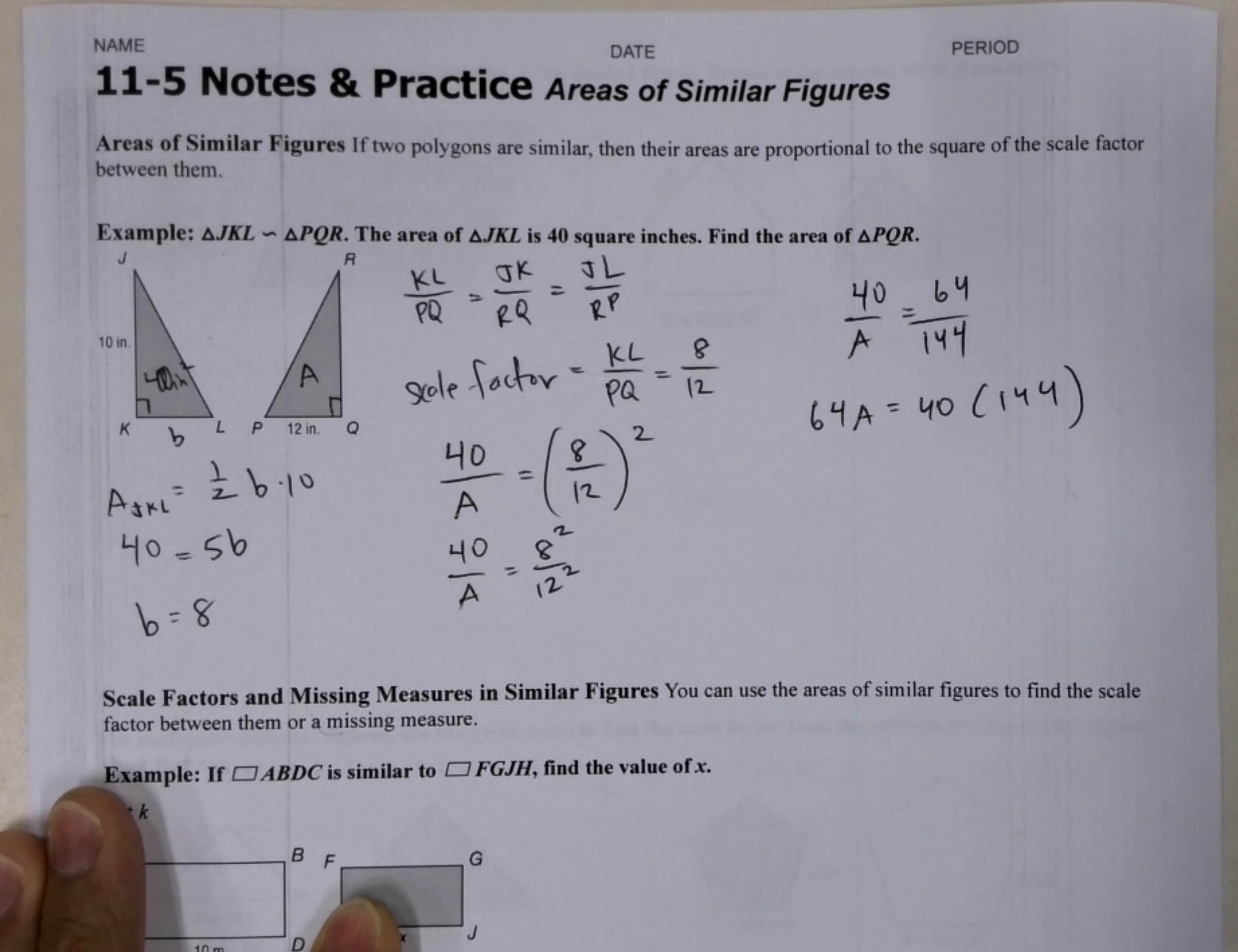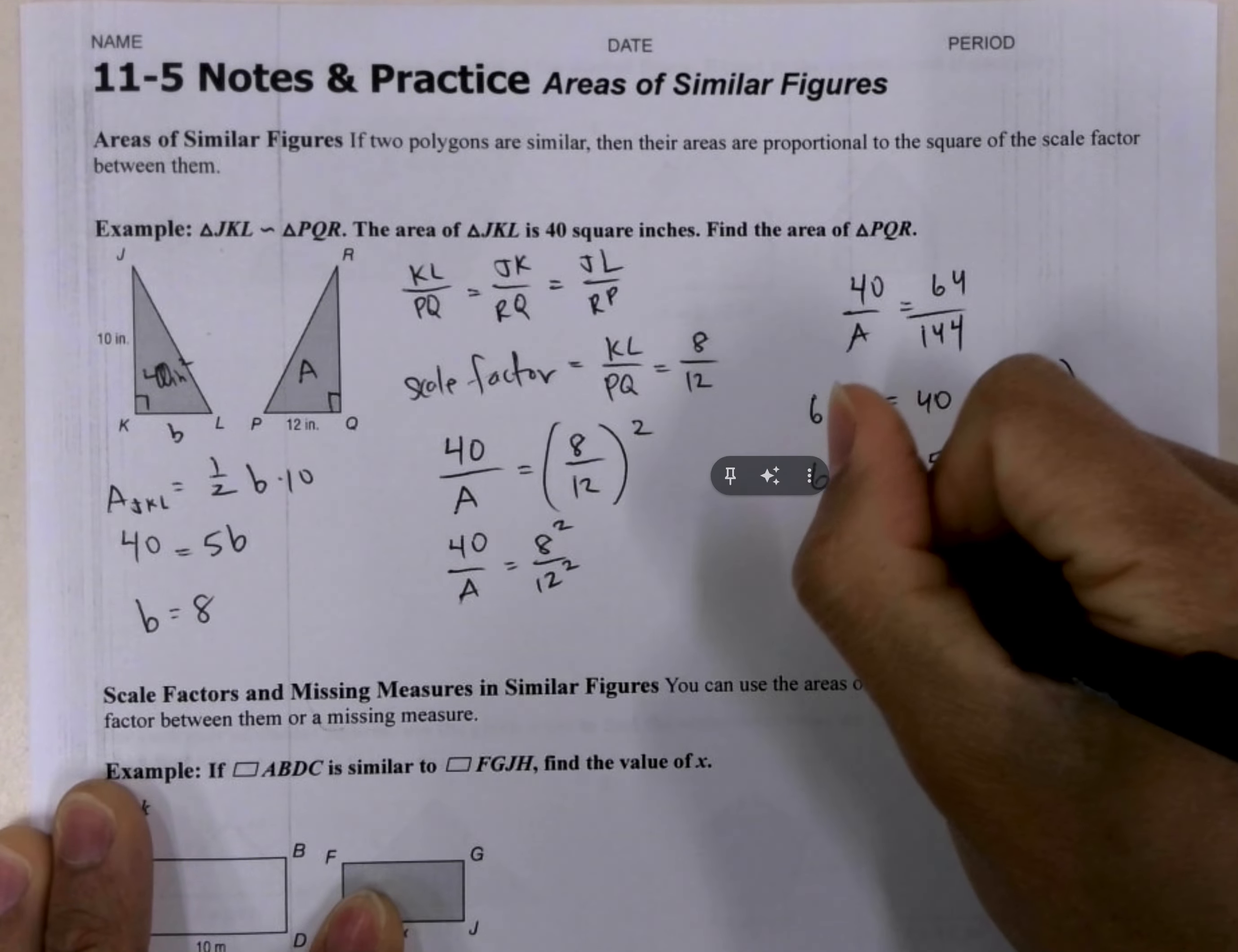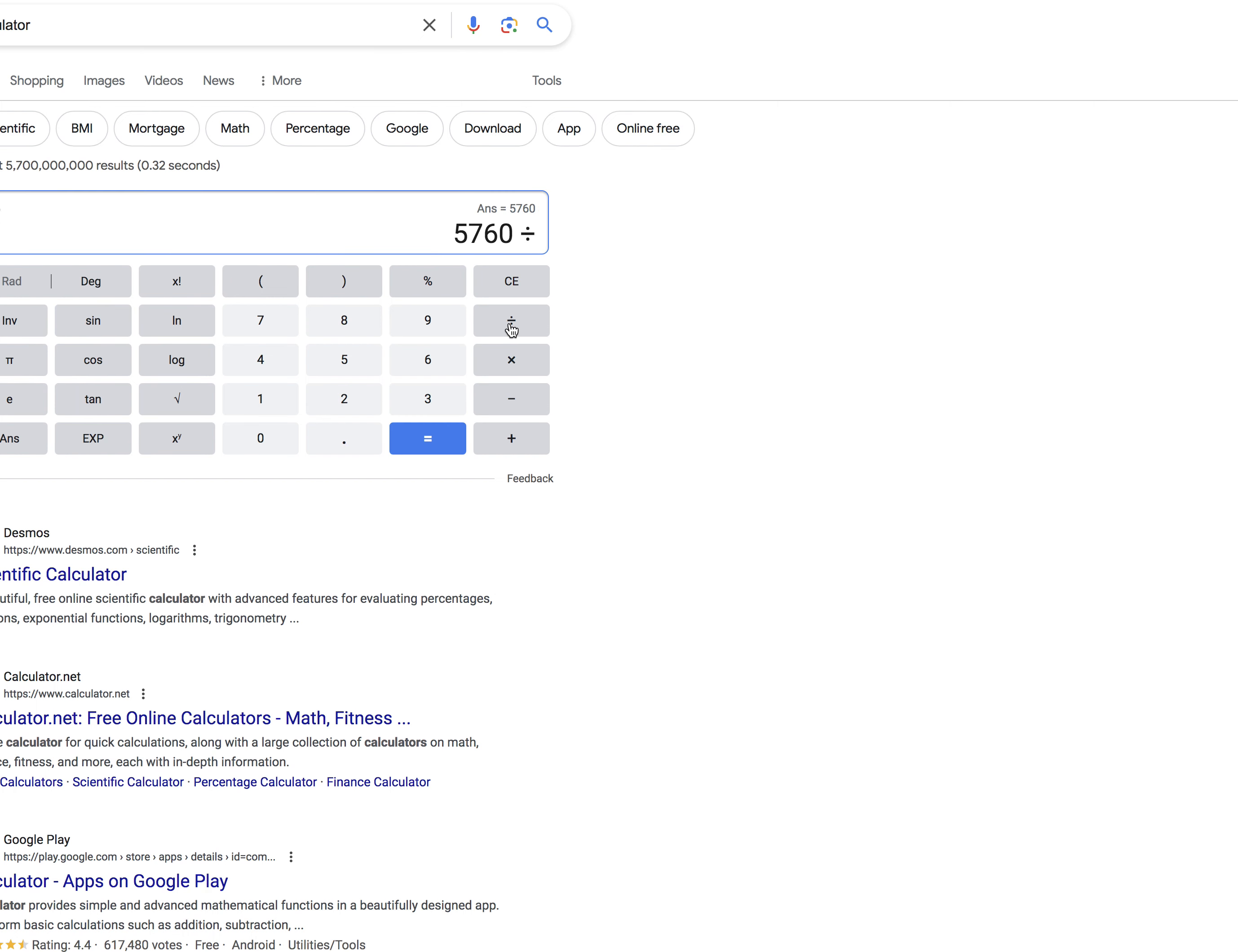I'm going to need a calculator now. And so it's going to be 40 times 144 is equal to that big number. So we get 64A is equal to 5760. And then from here, we're going to divide by 64. And we'll get the area of the PQR. So let me come back over here and I'm going to divide by 64 and I get 90. So 90.